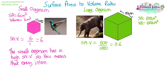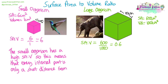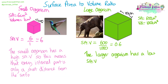The small organism has a high surface area to volume ratio, meaning every internal part is quite a short distance from the surface. The opposite is true for the larger organism — it has a low surface area to volume ratio, so internal parts, especially those in the middle, are a fairly long distance from the surface.